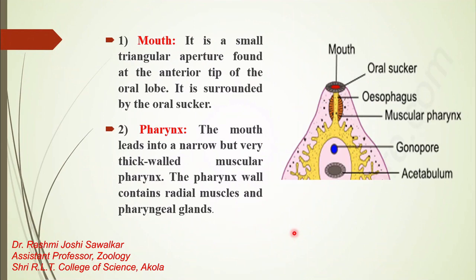The first part of the digestive system is the mouth. Friends, see the diagram on the right side. The mouth is a small triangular aperture found at the anterior tip of the oral lobe, surrounded by the oral sucker.